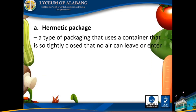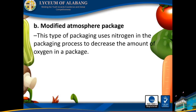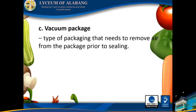Types of food packaging. Hermetic packages: a type of packaging that uses a container so tightly closed that no air can leave or enter. Example: canned goods. Modified atmosphere packaging: this type uses nitrogen in the packaging process to decrease the amount of oxygen in a package. Example: packaging of chips. Vacuum packaging: this type requires removing air from the package prior to sealing. Example: packages for processed meats.